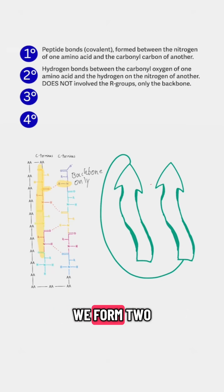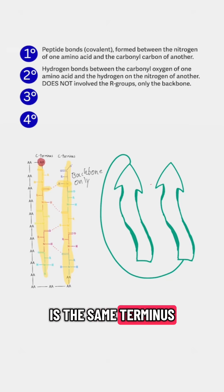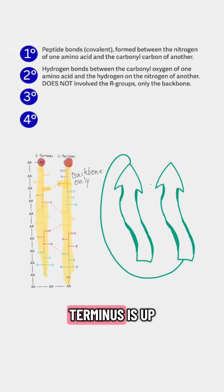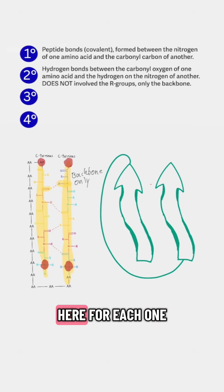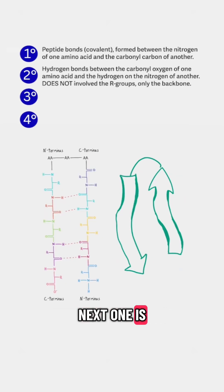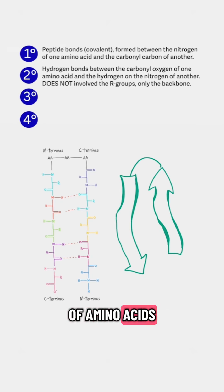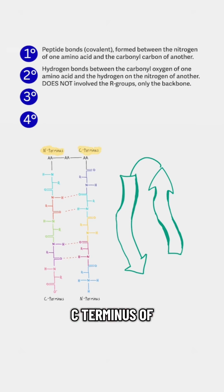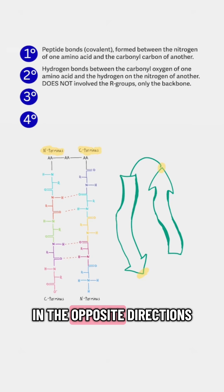Parallel beta sheets happen whenever we form two rows of amino acids, and on the end of each row is the same terminus — so the C-terminus is up here for each row, and the N-terminus is down here for each one. You often see these represented by arrows that point in the same direction. The next one is anti-parallel beta sheets, and we start with the same two rows of amino acids, but this time the N-terminus of one lines up with the C-terminus of the other, and you'll see these represented by arrows that point in opposite directions.